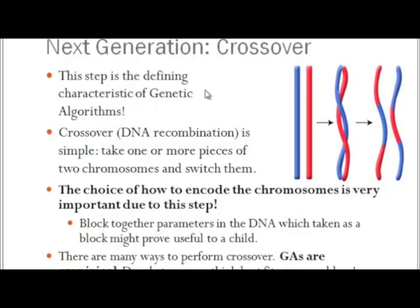This returns us to the comment made on the encoding slide: the order in which you list your parameters is very important. If we were to choose base temperature, then x position, then max temperature, then y position, then standard deviation, we would lose all benefit of this crossover step. Because the chromosome is scrambled, having crossover preserve stretches of chromosome is completely useless. We automatically tend to group temperatures together and positions together, but this is something to pay attention to and do intentionally due to this crossover step.